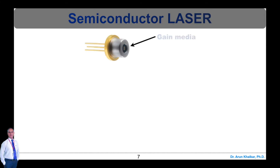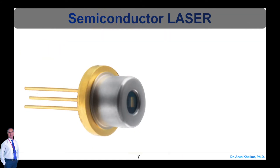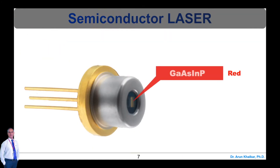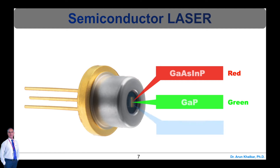The most important part of a laser is the gain media. The gain media of a laser is a semiconductor material. The most common semiconductor materials used in lasers are Gallium Arsenide and Indium Phosphorus for red color, Gallium Phosphorus for green color, and Gallium Nitrogen for blue color.